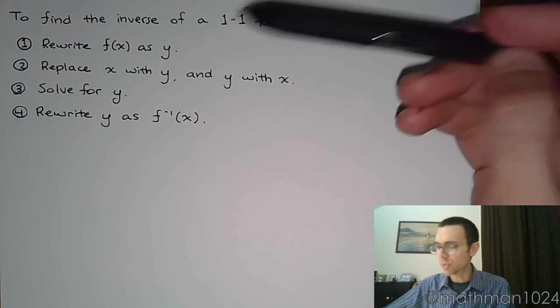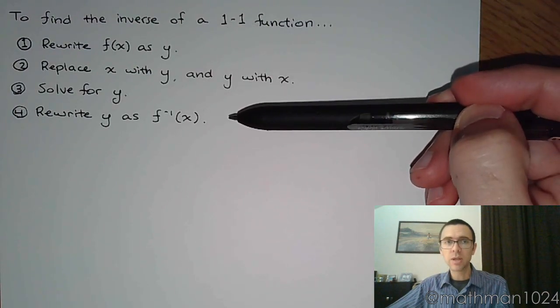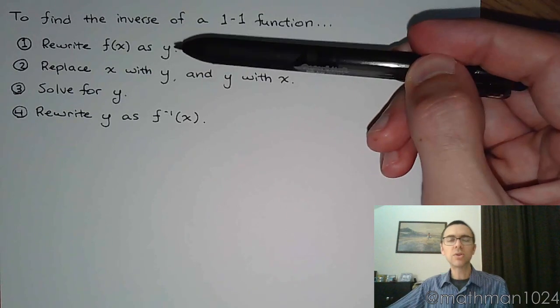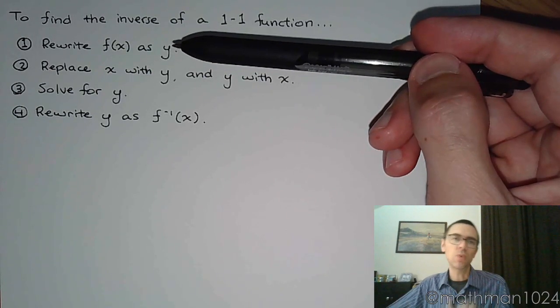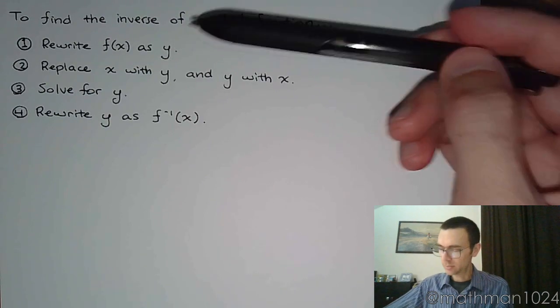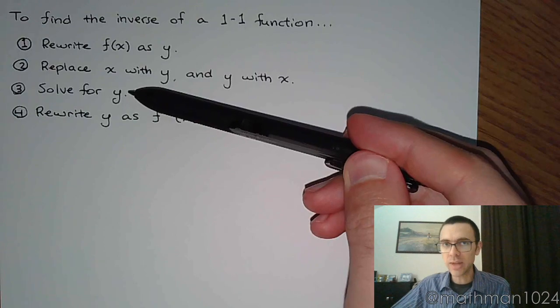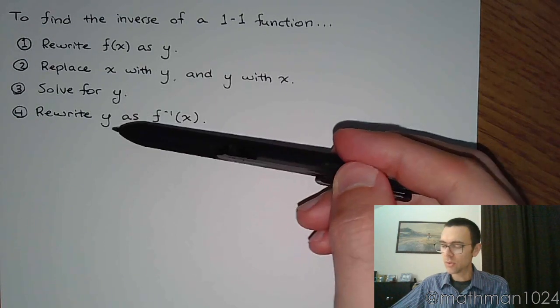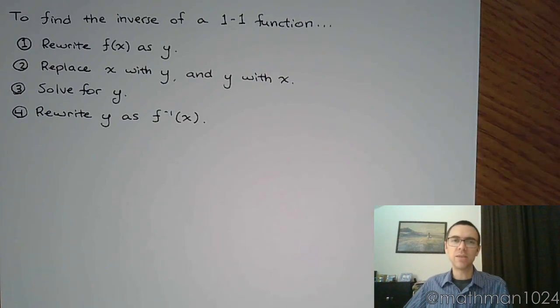Here we have a nice algebraic way of finding the inverse. The first step is to rewrite the function notation as y, then you're going to swap the x's with the y's and the y's with the x's. That's what I keep harping on. Y becomes x, x becomes y. Once you do that, solve that new equation for y, and once you have y by itself, rewrite that y as f inverse of x.